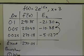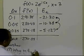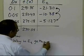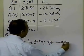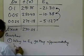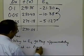why is the true error getting approximately halved as delta x is halved?